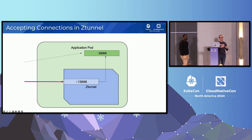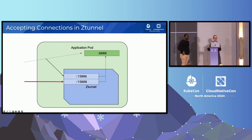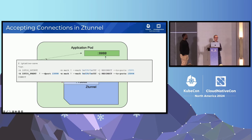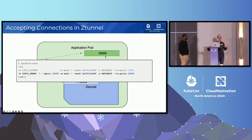We handle non-mesh inbound traffic with another dedicated port and a similar iptables rule to the outbound side: anything coming into the pod gets redirected to this other port. Again, we use that mark to avoid loops, and we exclude tunnel traffic so we don't accidentally treat it as plain text.